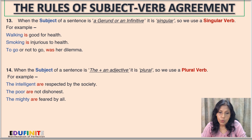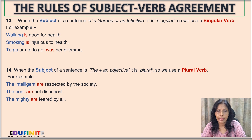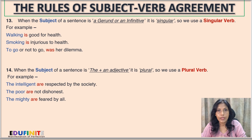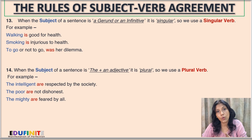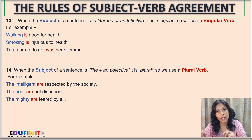Continuing Rule 13 with an infinitive example: 'To go or not to go was her dilemma.' 'To go' is an infinitive, so with an infinitive as subject we use a singular verb — 'was', not 'were'.